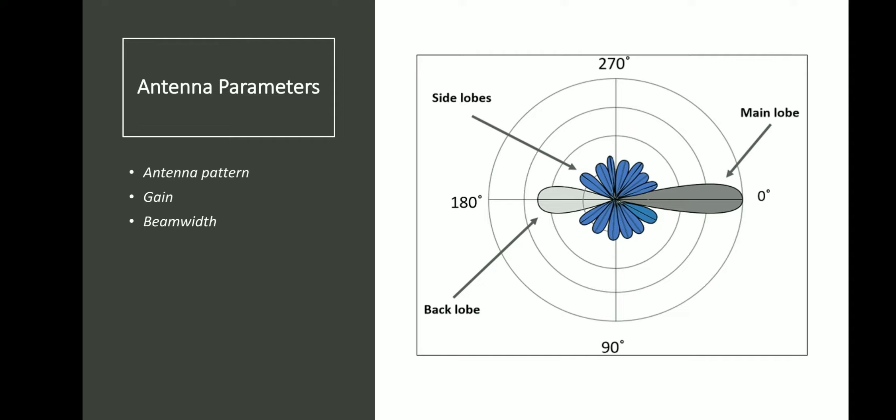There are different parameters like antenna pattern, gain, and beam width. So what is antenna pattern? In this figure it is quite clearly explained: a polar plot has been drawn where, if you move in the clockwise direction, the angle moves from 0 degrees to 360 degrees — so 0, 90, 180, and 270 degrees. The plot drawn here is of the radiation pattern, that means the electric field — or rather the square of the electric field — is drawn here.